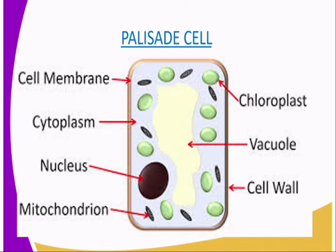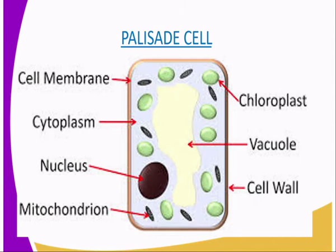The palisade cells are the main plant photosynthetic cells, found beneath the upper epidermis of the leaf. They are closely packed and have numerous chloroplasts that contain chlorophyll to trap light energy for photosynthesis. As seen in our diagram, the function of the chloroplast is to trap light energy. Photosynthesis is the process by which plants make their own food.